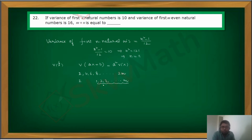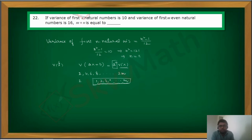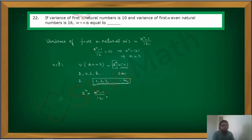For this set of first m natural numbers, if I know the variance V, then the new variance — when each value is multiplied by 2 — becomes 2² times that variance. Therefore, the variance of 2, 4, 6, 8, ... becomes 2² × (m² - 1)/12. The direct formula gives variance of first m natural numbers as (m² - 1)/12, and since each value is multiplied by 2, the new variance is multiplied by 2², giving 4·(m² - 1)/12.